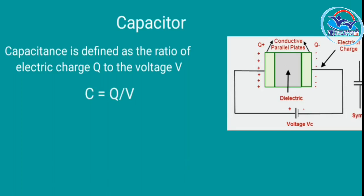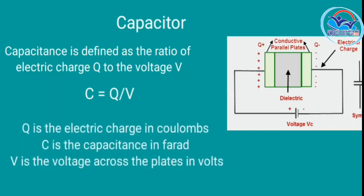Capacitance C is equal to Q divided by V, where Q is the electric charge in Coulombs, V is the voltage across the capacitor, and C is the capacitance in Farads.